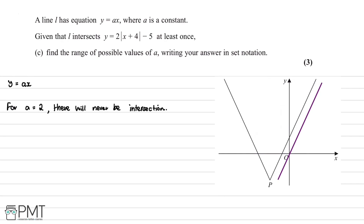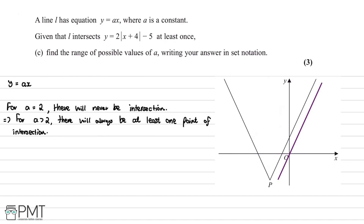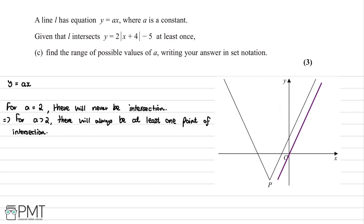If we increase the gradient above 2, the line becomes steeper and will always intersect the curve, so for a > 2 there is always at least one intersection. For the other direction, the critical case is when the line passes through point P = (-4, -5). Substituting into y = ax: -5 = -4a, giving a = 5/4 = 1.25.